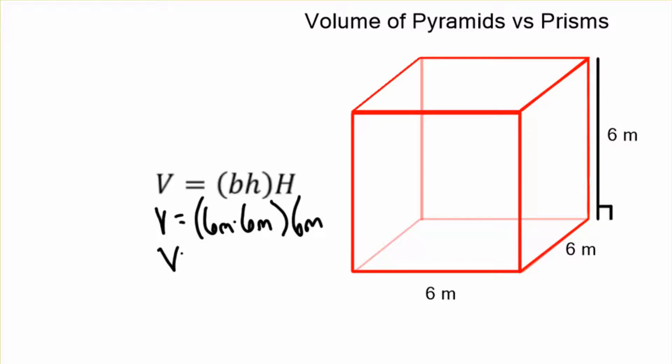So we multiply. 6 times 6 times 6 in our calculator is 216, and remember we're multiplying meters times meters times meters. You can treat that just like it's a variable. It's meters cubed.